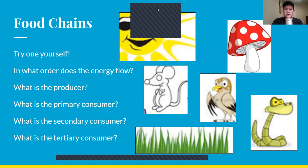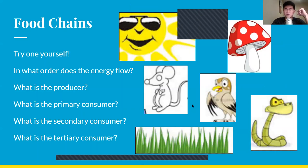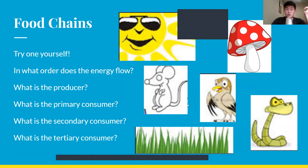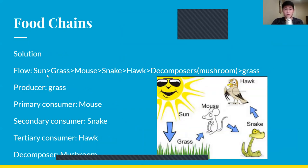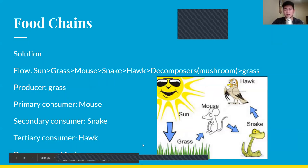Try another one yourself. In what order does the energy flow? What's the producer — which one produces its own energy? What's the primary consumer — which animal eats the producer? What's the secondary consumer — what eats the primary consumer? And what's the tertiary consumer — what eats the secondary consumer? The answer: energy flows from the sun to the grass, to the mouse which eats the grass, to the snake, to the hawk, and they're all decomposed by the mushrooms which bring nutrients back to the grass. So the grass is the producer, the mouse is the primary consumer, the snake is the secondary consumer, the hawk is the tertiary consumer, and the mushrooms are the decomposers.